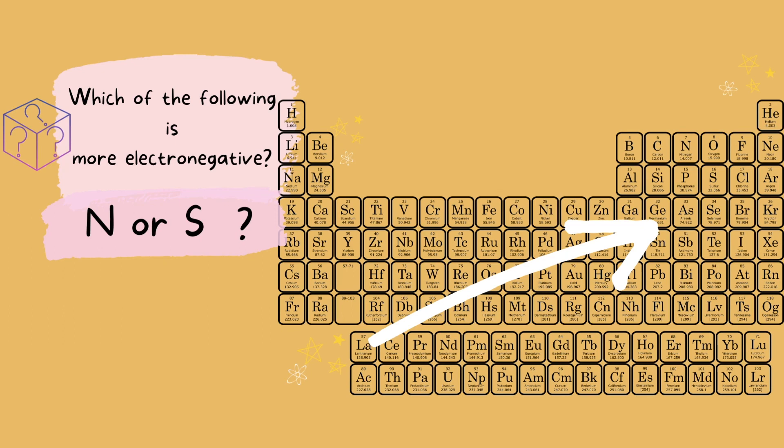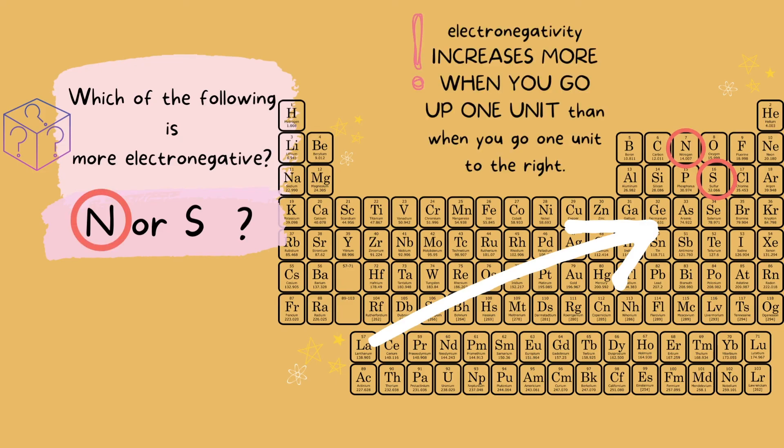How about nitrogen and sulfur? Both look almost equidistant to fluorine, but nitrogen is going to be more electronegative here. The general rule is going up one unit is more electronegative than going to the right one unit. So going one unit up from phosphorus to nitrogen, there is more electronegativity than going from phosphorus one unit to the right to sulfur.